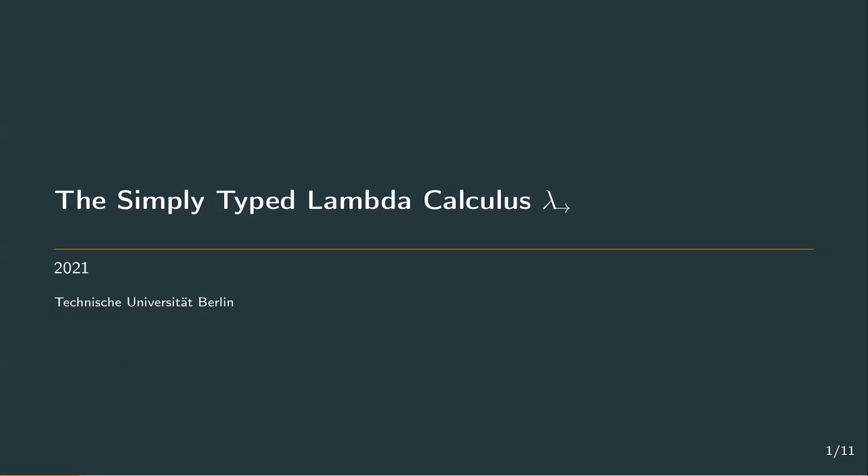Hello and welcome back to the LambdaCube Unboxed. In this video we're going to introduce types into the lambda calculus. The result of this is what's known as the simply typed lambda calculus, which is denoted by a lambda with a simple arrow. Before we start with the definition of that, let's quickly recall the conclusion at the end of the first chapter.